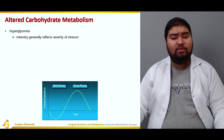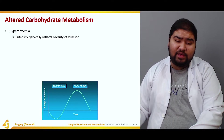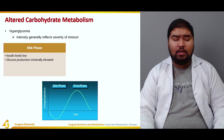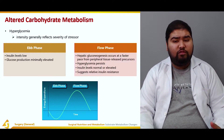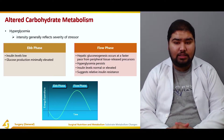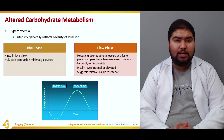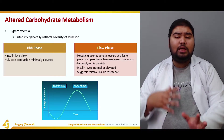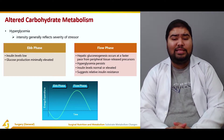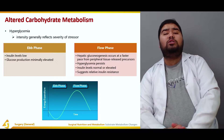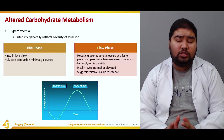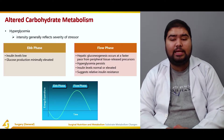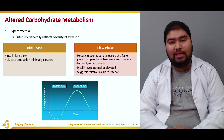The intensity of hyperglycemia is related to and reflects the severity of the stressor. In the ebb phase, insulin levels are low, so glucose production is only minimally elevated. In the flow phase, hepatic gluconeogenesis occurs at a faster pace from peripheral tissue-released precursors — primarily amino acids and ketone bodies — which help drive hepatic gluconeogenesis. Hyperglycemia persists due to glycolysis, glycogenolysis, and proteolysis. Insulin levels are normal or slightly elevated, suggesting a relative insulin resistance.